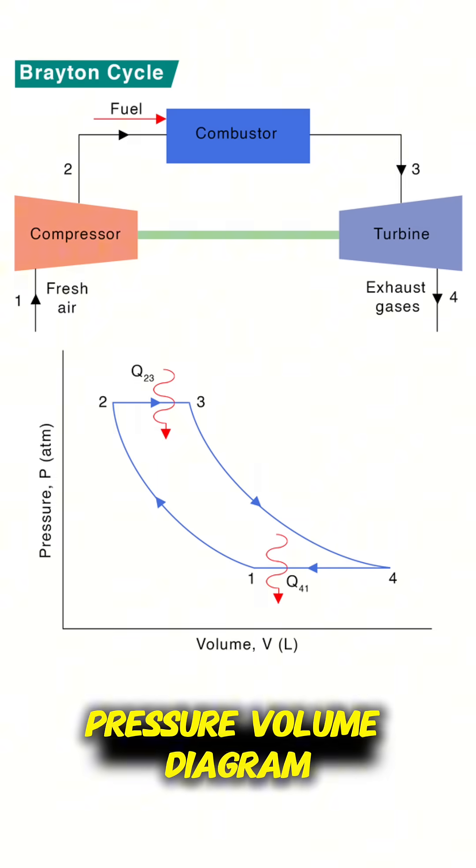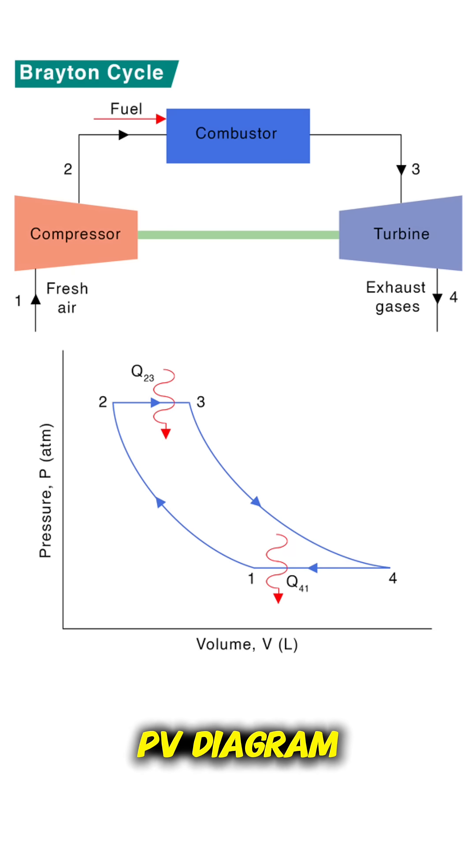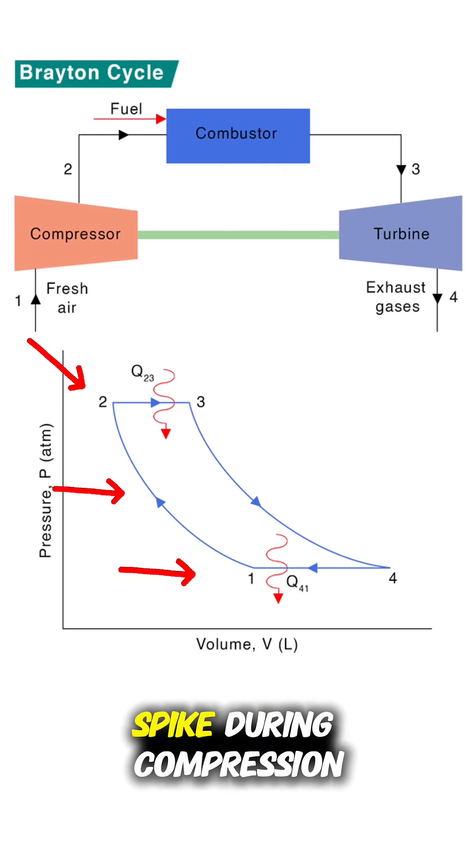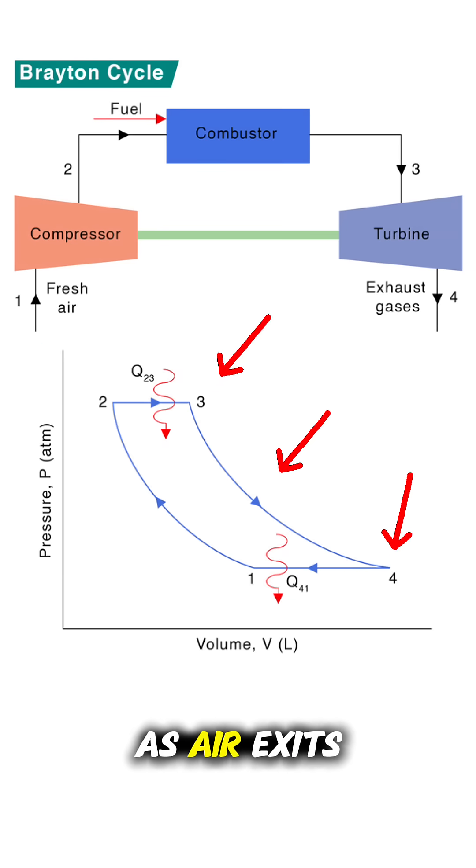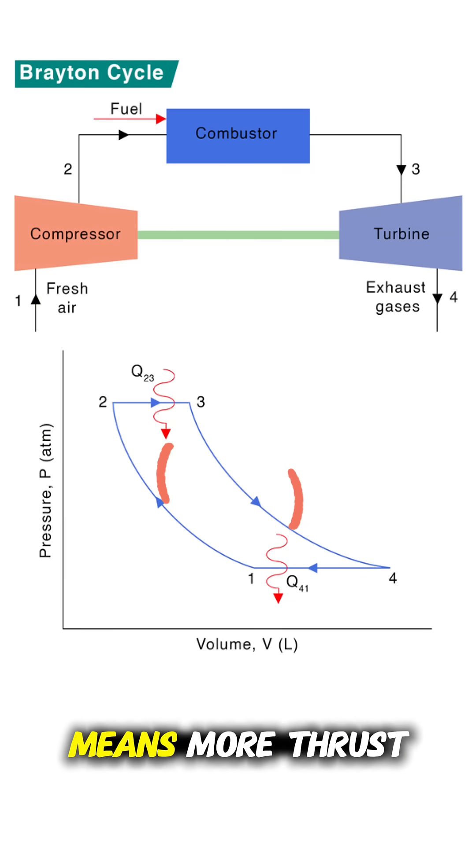On a pressure-volume diagram, also known as a PV diagram, we see pressure spike during compression, expand during combustion, and drop again as air exits through the turbine and nozzle. This loop is continuous. More cycles per second means more thrust.